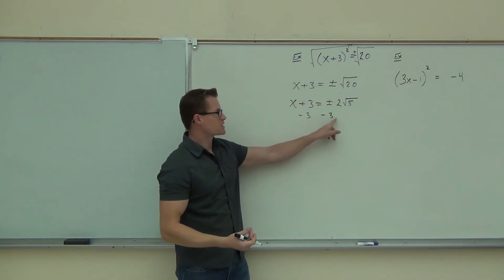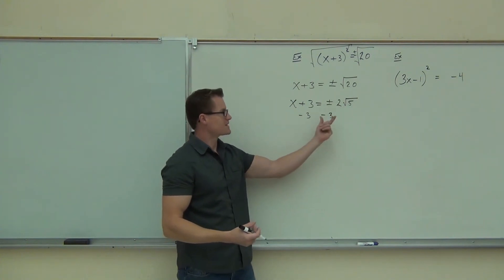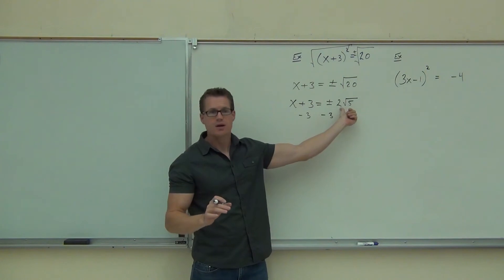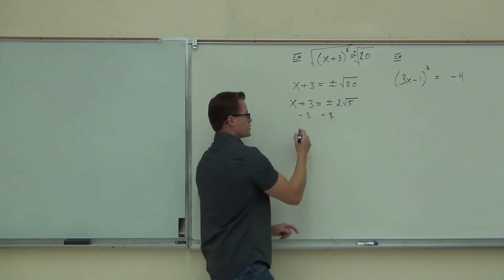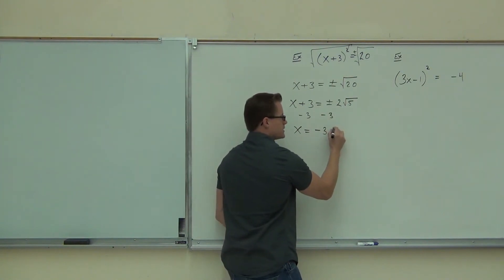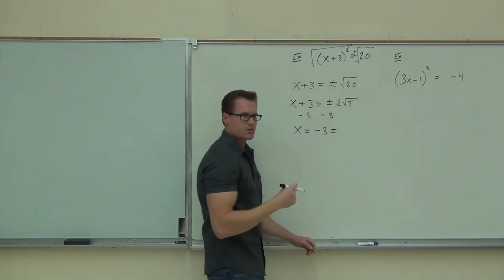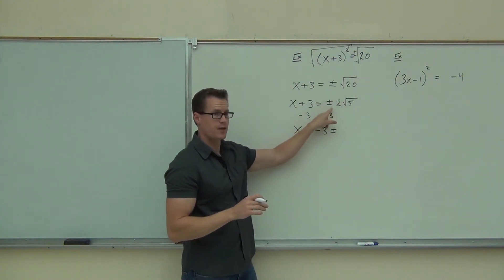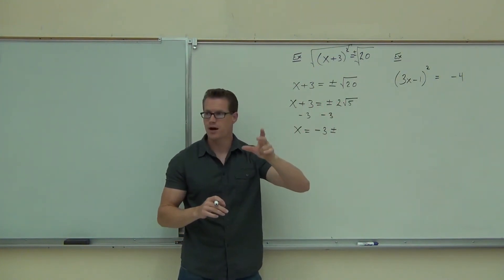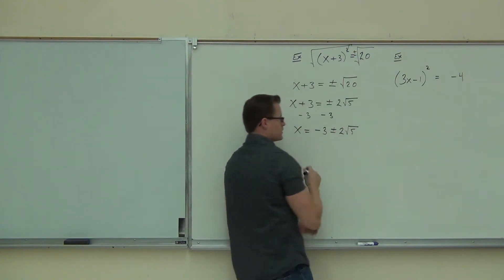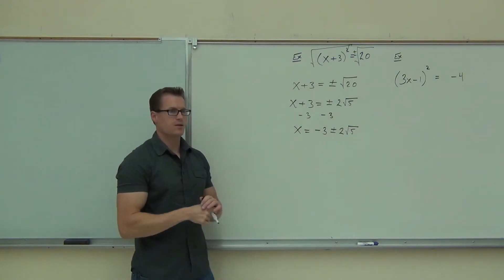The way we do that is we subtract or add whatever constant term we have. Here we're going to be subtracting 3 from both sides. Now, where this one doesn't have a radical like this does, it says I can't subtract that from the 2. There's nothing I can do to put those things together. So this is going to go in the front of our expression. We get x equals negative 3. Then we still have to have a plus or minus. So I want to be real sure that you didn't put the plus or minus here. You put it in front of that expression, in front of the 2 root 5.